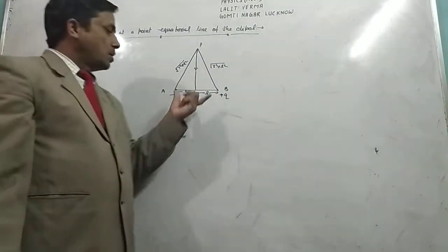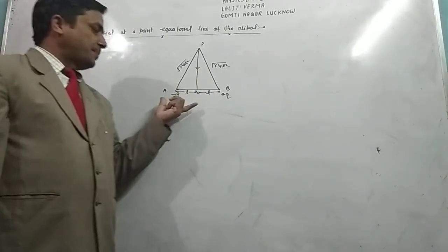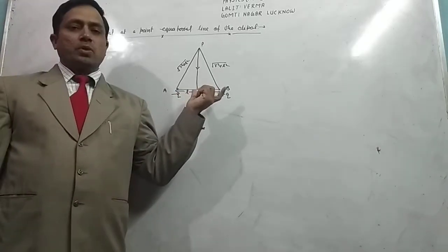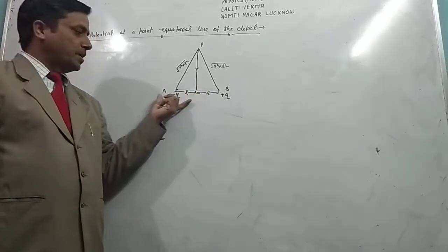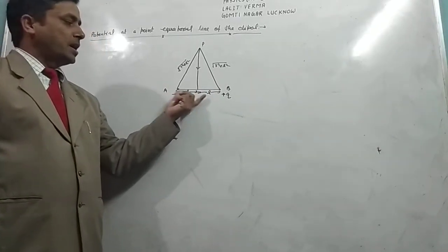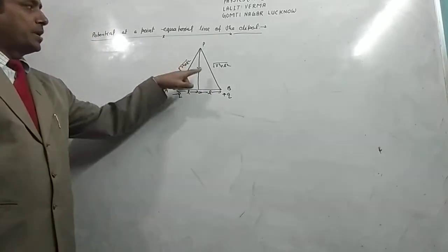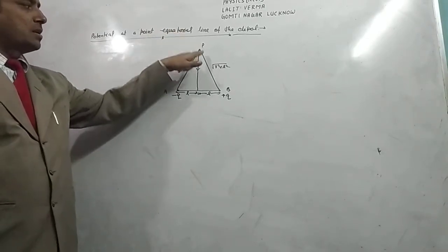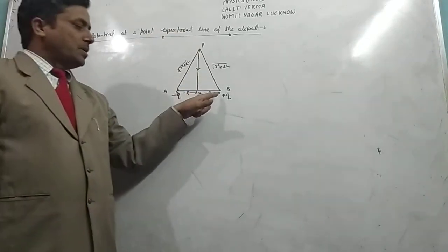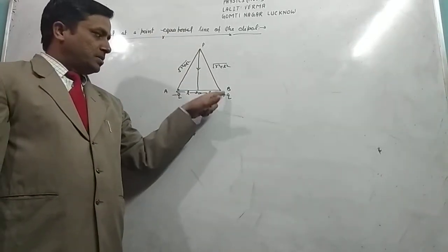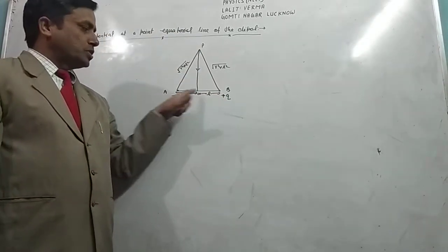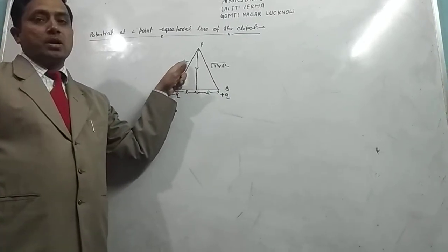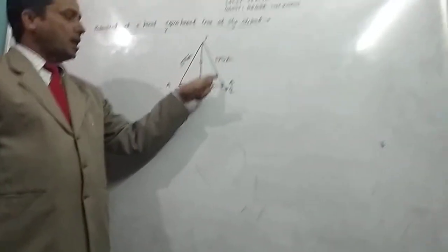Electric dipole — charges minus Q and plus Q, separated by a small distance 2L. Then, at equatorial point P, find the potential. Due to charge minus Q, the distance is root of R square plus L square.